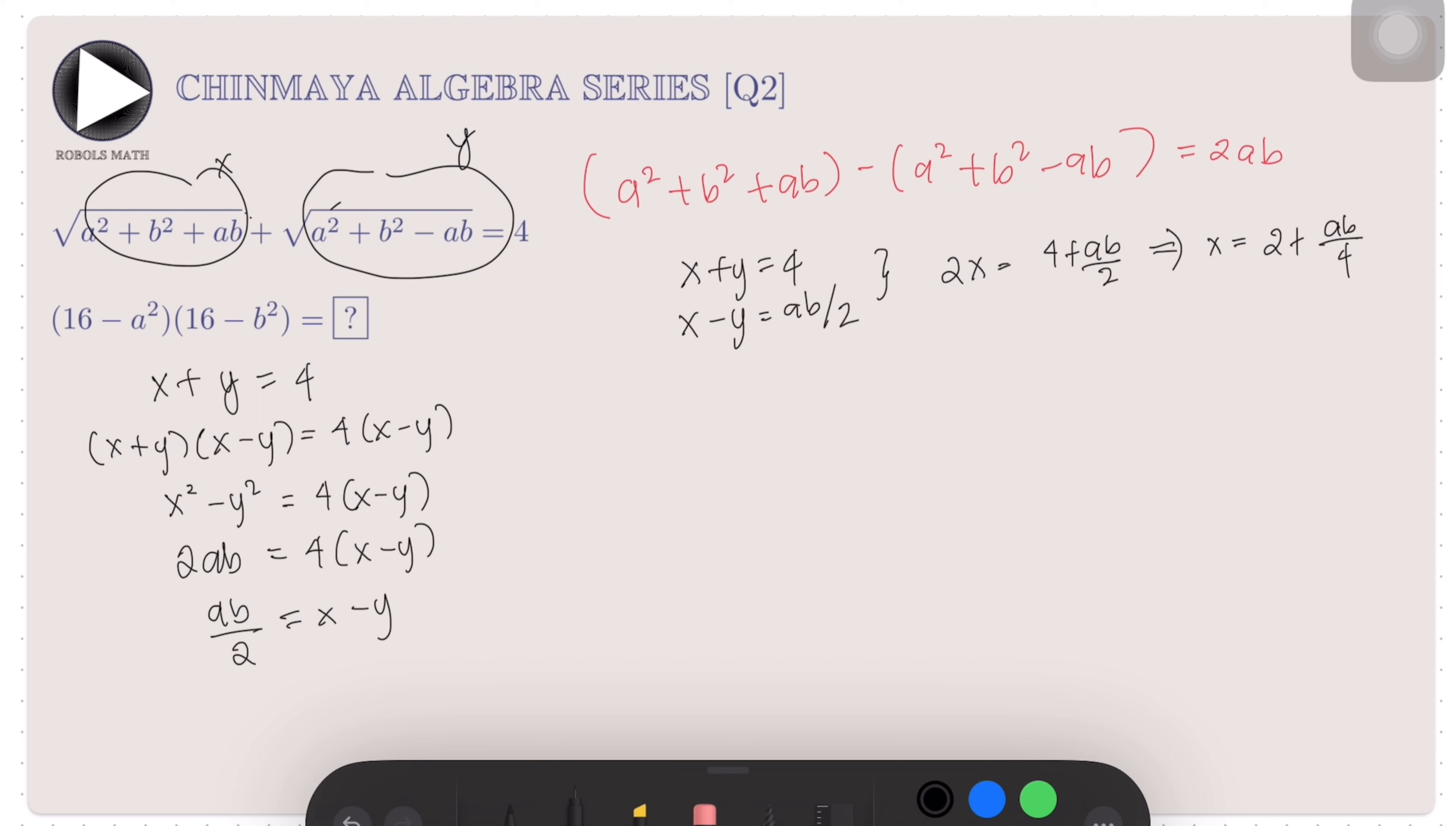Now, we put back the expression for x, which is √(a² + b² + ab), and equate that to the expression we got, which is 2 + ab/4. Remove the radical by squaring both sides, we get a² + b² + ab = (2 + ab/4)².